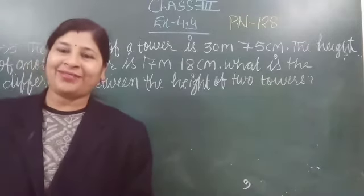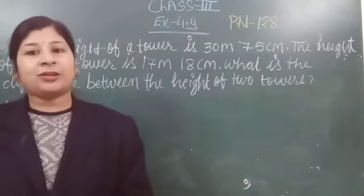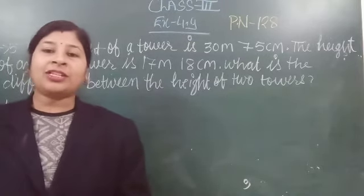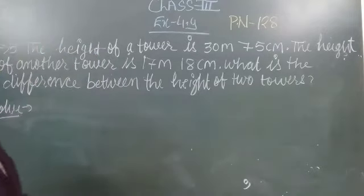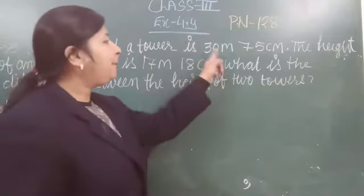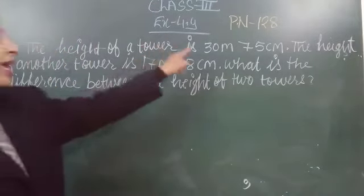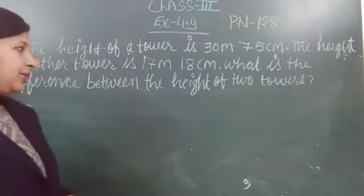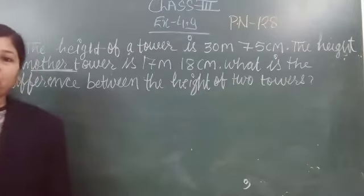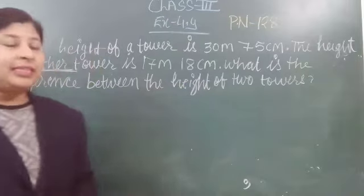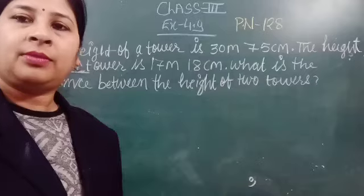Students, how are you? Fine, very good. So dear students, in last class we solved exercise 4.9 up to question number 4. In this class we solve question number 5 of exercise 4.9. The height of a tower is 30 meter 75 centimeter. You have another tower whose height is 70 meter and 18 centimeter.